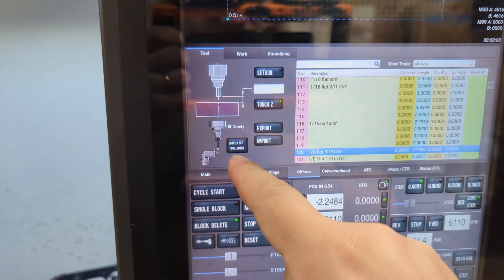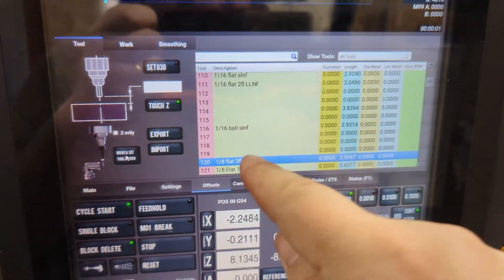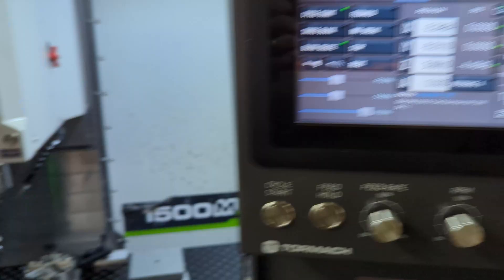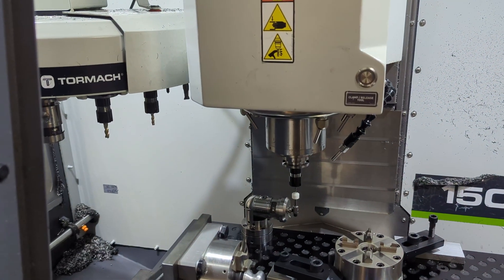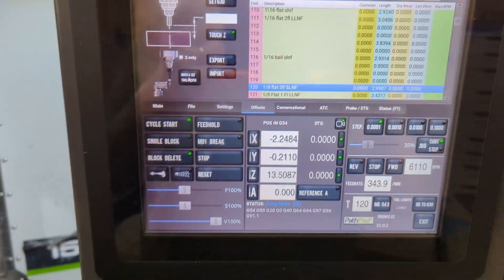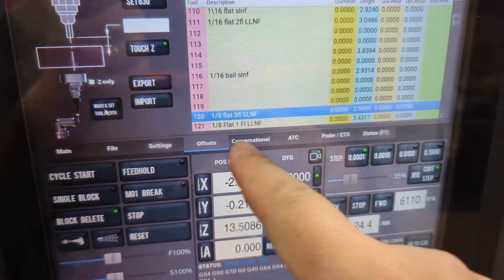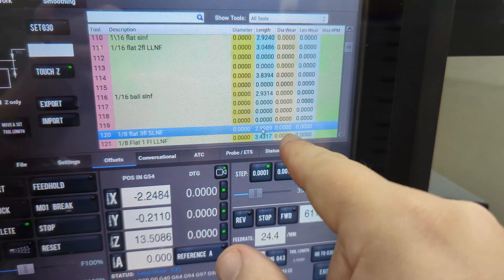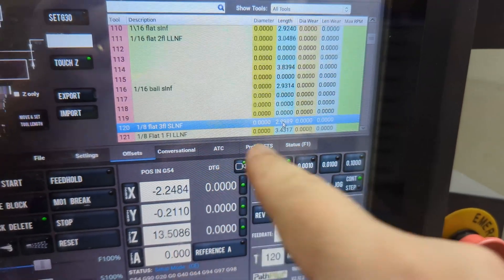This one I do need to measure, so move and set length. And since I've used this tool in the past, it already knows eighth inch flat three flute, standard length non-ferrous. And it'll do our measurement here. When I last put this in, I didn't have the tag system in place yet, but I do now. And I won't have to re-measure it again. As long as I don't break the tool, I'll just take it out and put it in my tool rack.